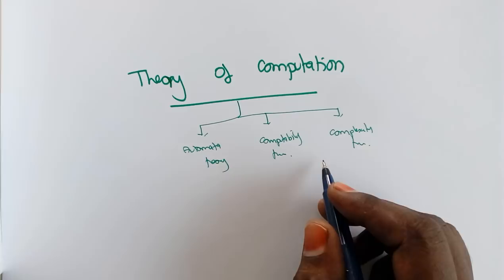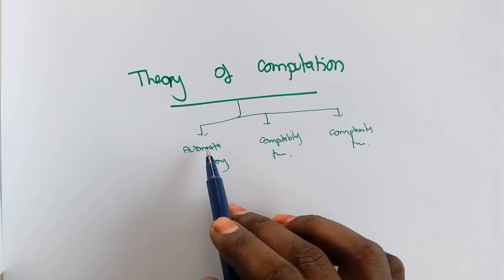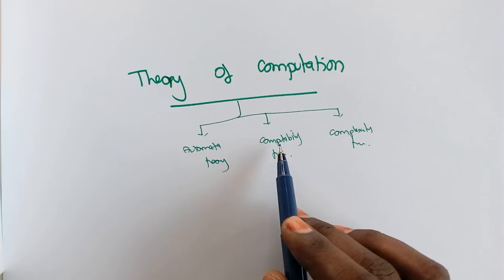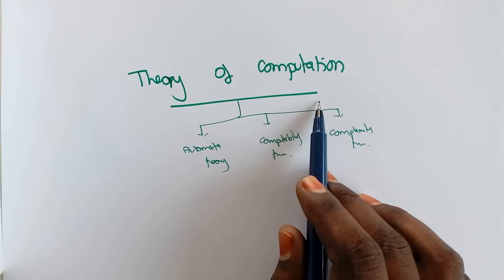If a problem is a solvable one, we have another branch called Complexity Theory, which gives a description about the time and space needed for solving that problem — for the algorithm. As a whole, Theory of Computation deals with mathematical models, their computability limitations, and if it is computable, what is the complexity of that problem's solution.